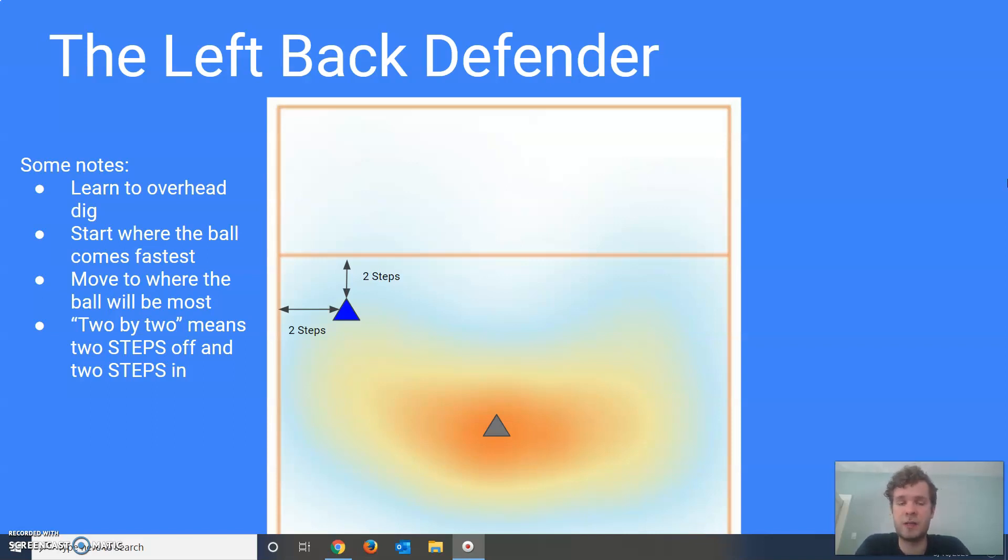That's important because you'll hear 10 by 10 as a position later. 10 by 10 is in feet - 10 feet by 10 feet. This is two by two, which is two steps by two steps. Two feet would put you very, very close to each of those lines, but two steps kind of gets us back a little bit farther.